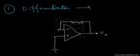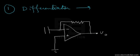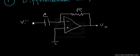We obtain our output voltage at the output terminal. At the input we have a capacitor — let's call it C — and we apply our input voltage VI here. The resistance in the feedback path is termed R. Depending upon the changes in the input voltage, a certain amount of current will flow through the capacitor.